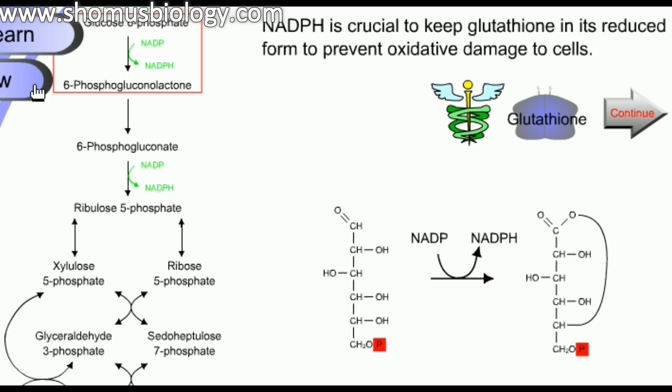The first step of the oxidative pathway is where NADPH is produced when glucose-6-phosphate is converted into 6-phosphogluconolactone. This step requires the enzyme glucose-6-phosphate dehydrogenase, which reduces NADP into NADPH. NADPH is crucial to keep glutathione in its reduced form to prevent oxidative damage of the cell, because if glutathione gets oxidized it will cause degradation in downstream cellular processes.